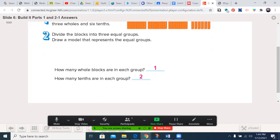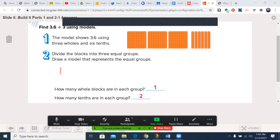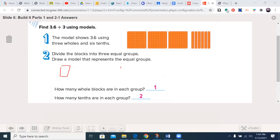Now, this is one of the ones where we don't have to do a lot in the way of regrouping, so that's a benefit. In our step one, the model shows 3.6, or three and six tenths, using three wholes and six tenths. Divide the blocks into three equal groups. Draw a model that represents the group. So let's remember here that we have the three and the six. And we're going to go ahead and go into that part.